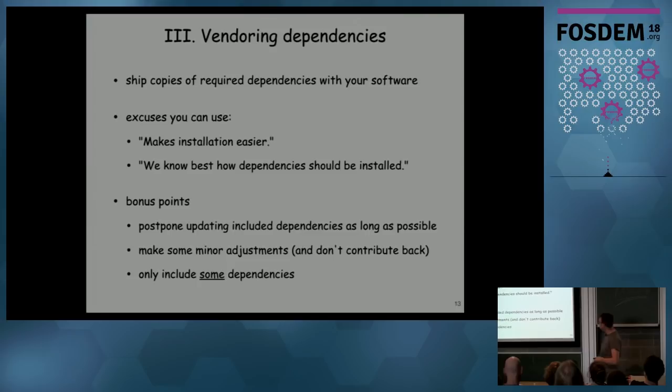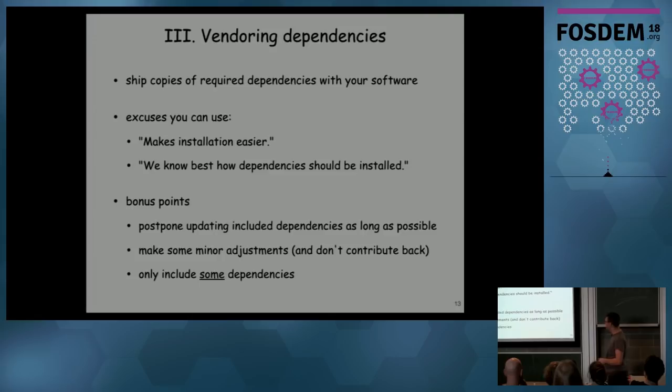Vendoring of dependencies is something that a lot of projects actually do — they include dependencies in their software, literally shipping copies of tarballs. It makes installation a lot easier, and they know how the dependencies should be installed. But for bonus points: include the dependencies but don't update them, even if they get bug fixes upstream. Patch the dependencies and don't send the patches upstream — just keep the patches. And only do it for some dependencies, not everything, so people still have to install the others themselves.